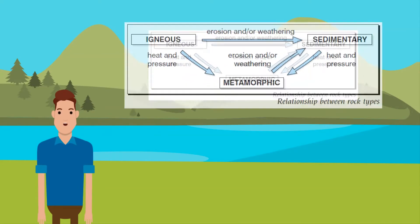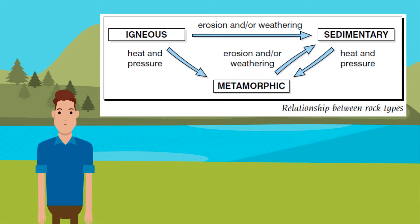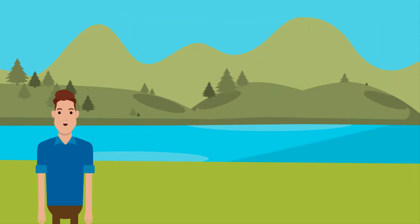Rocks can be changed from one group to another by heat, pressure, erosion, or weathering. Granite and basalt are examples of igneous rocks. Chalk, limestone, and clay are sedimentary rocks. Marble and slate are metamorphic rocks. It is important that you can recall examples of different types of rocks, as each has its own characteristics.